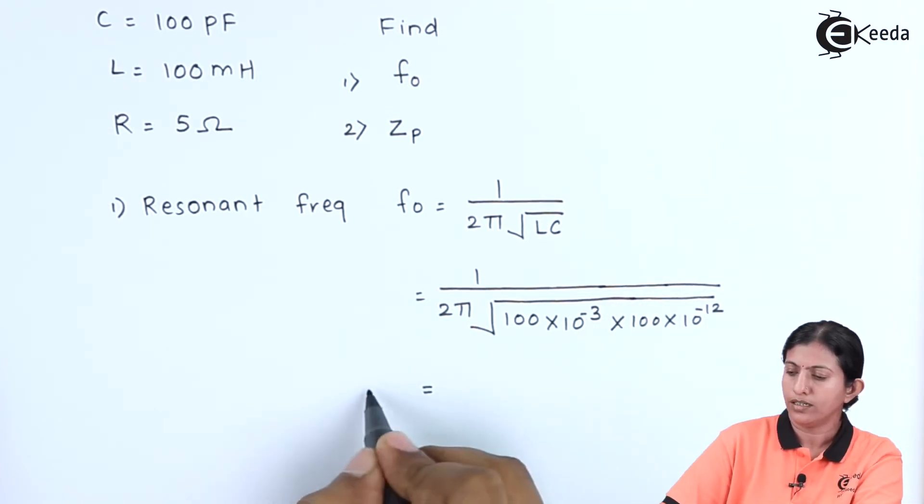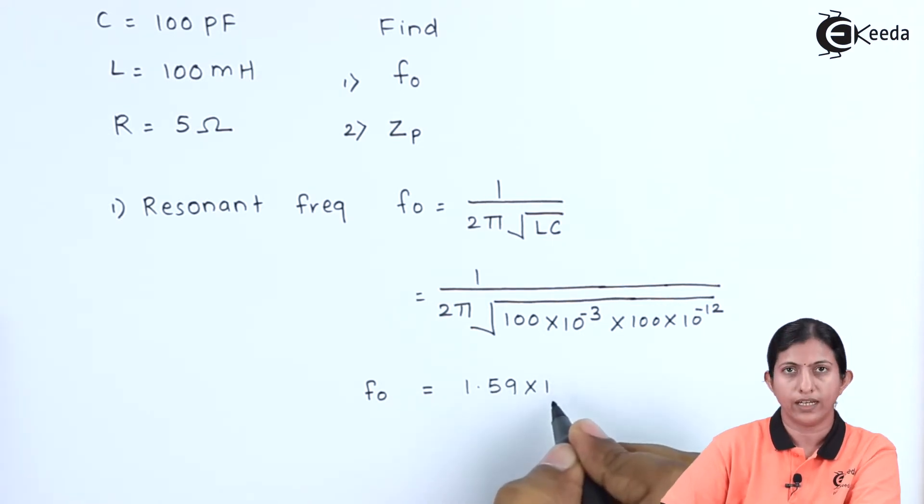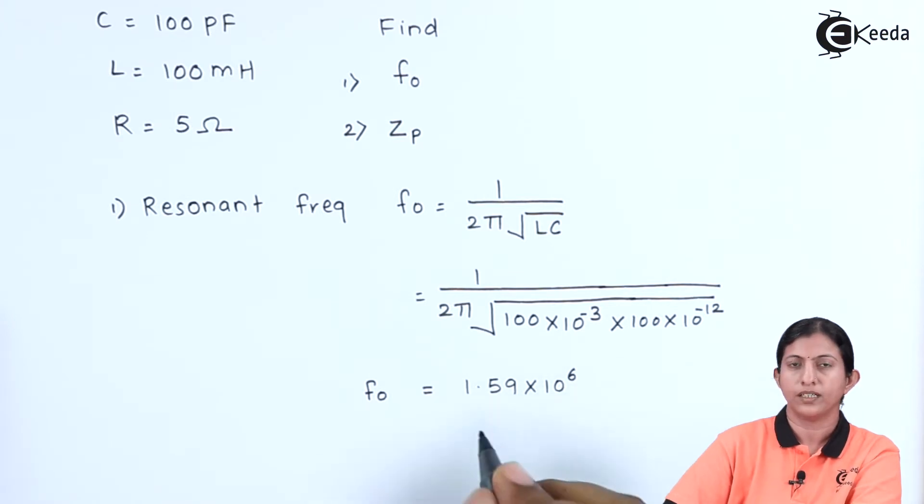This calculation gives the value of the resonant frequency as 1.59 × 10⁶, that is 1.59 MHz.